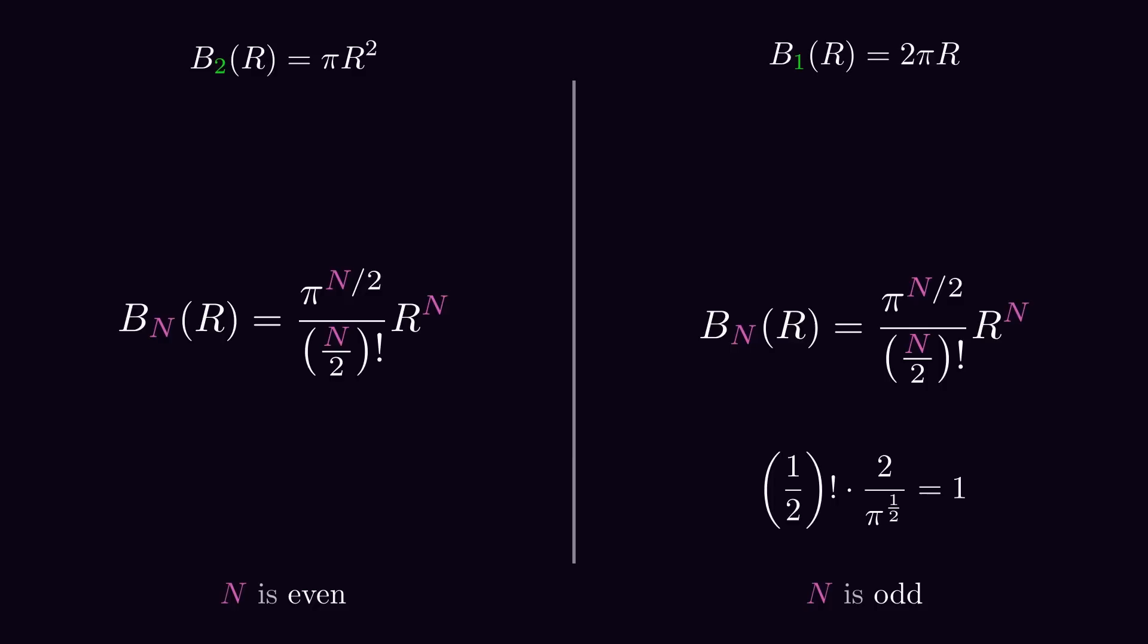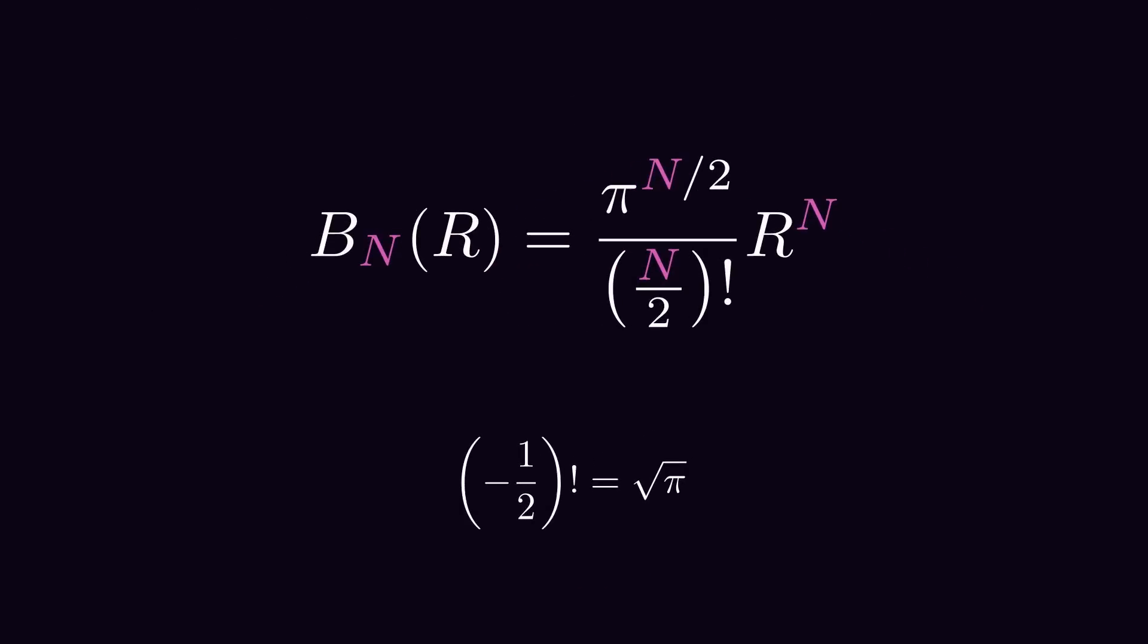So, one half factorial times 2 divided by π to the half, which is the square root of π, is now 1. And therefore, one half factorial is the square root of π over 2. No gamma function involved. Using our identity from earlier, we get the beautiful result of minus 1 half factorial equals the square root of π. And the complete formula for volumes of hyperspheres without distinction between even and odd values of n.